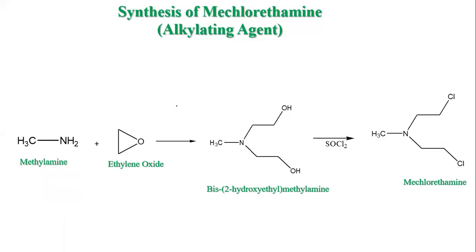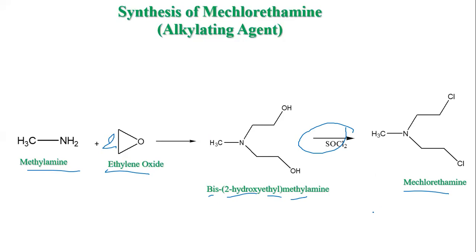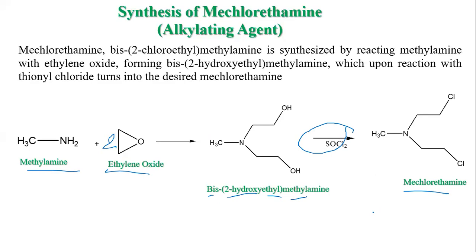So overall, the synthesis of Mechlorethamine includes the reaction of methylamine and two molecules of ethylene oxide, which produces the intermediate bis(2-hydroxyethyl)methylamine, which on chlorination with thionyl chloride gives us our targeted drug that is Mechlorethamine. Thank you.